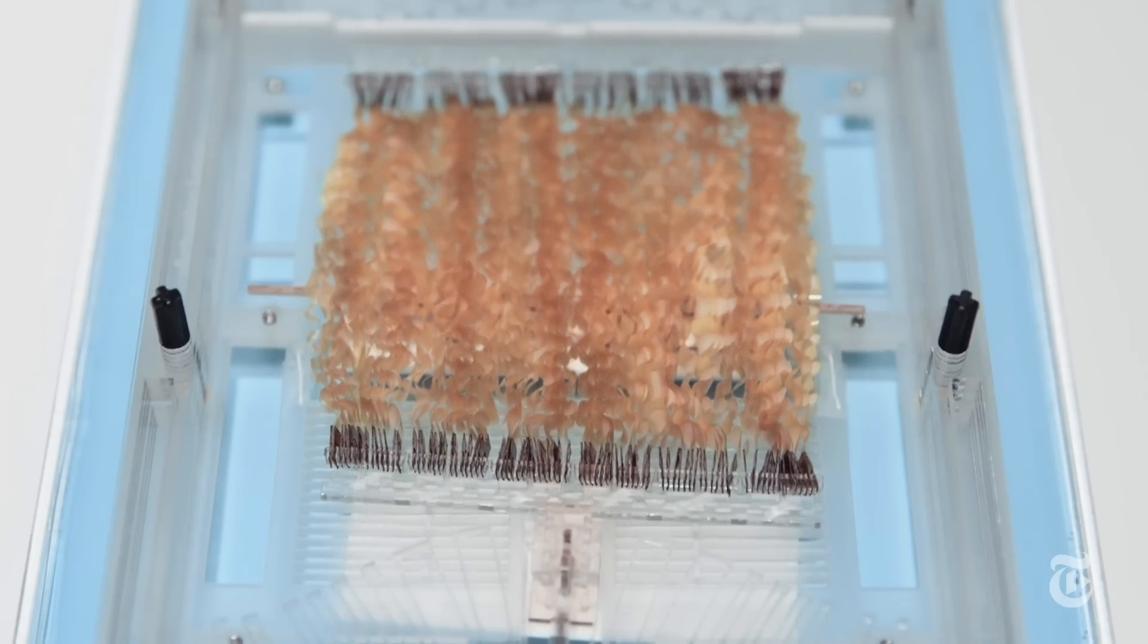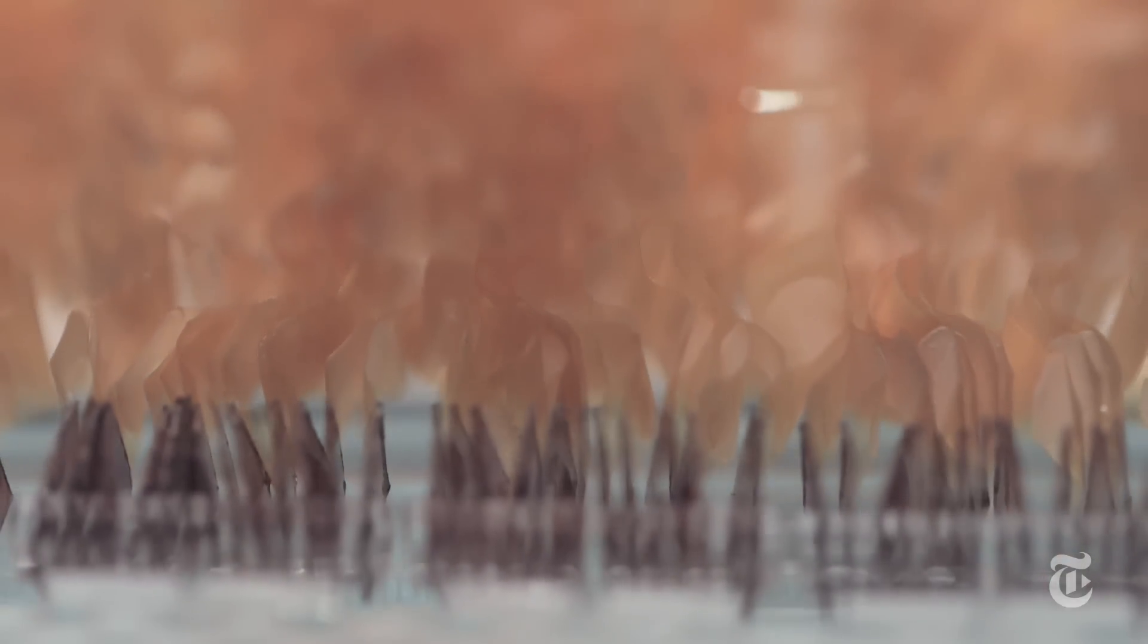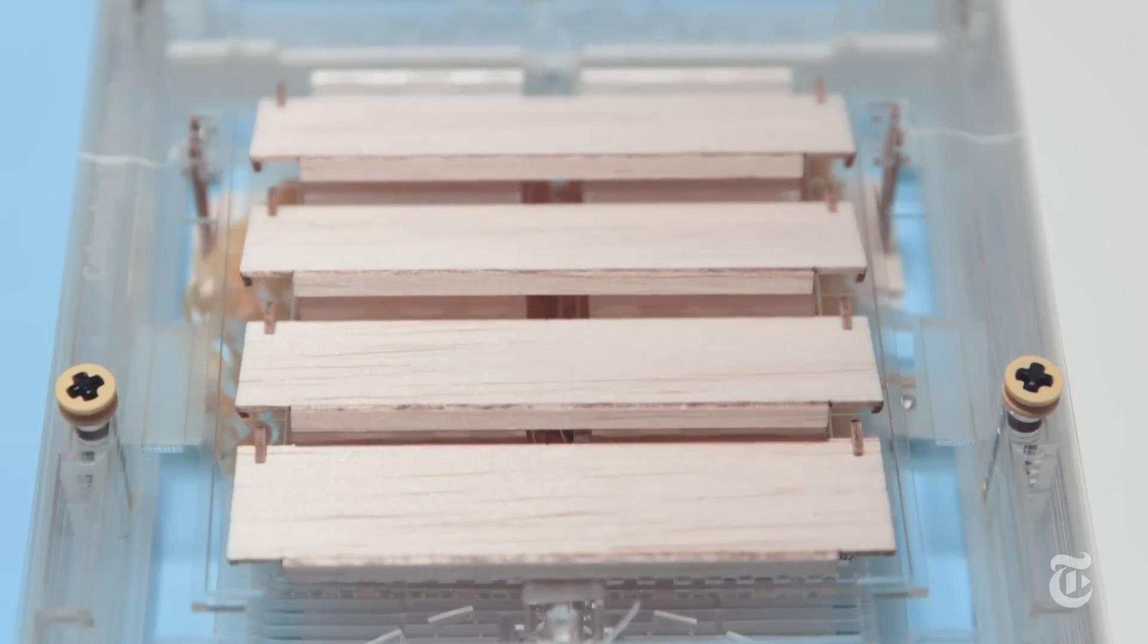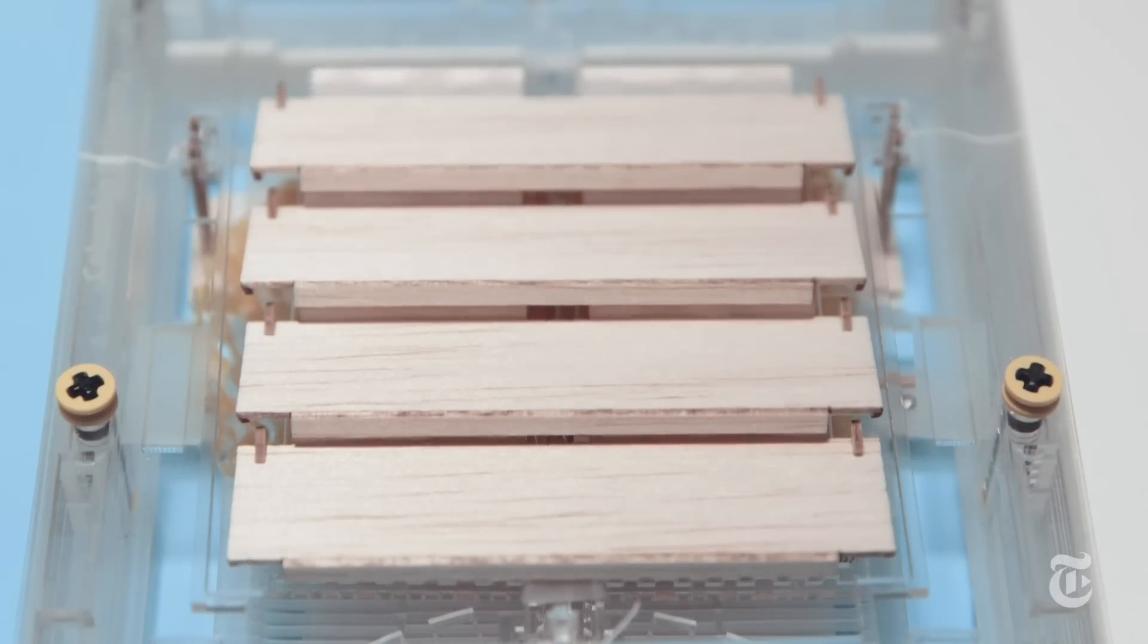As the spores absorb and lose water that comes from evaporation, the sections of tape expand and contract like muscles. They can lift weight or open and close small shutters.